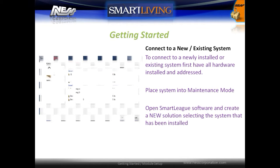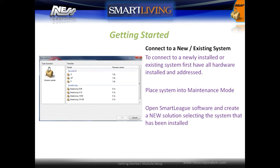To set up a new connection to a newly installed or existing system, first ensure all hardware is installed and addressed. Place the system in maintenance mode, then open up the Smart League software and create a new solution, selecting the Smart Living panel that has been installed.